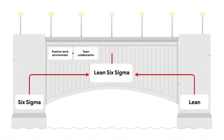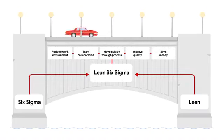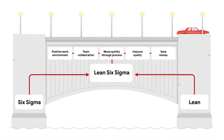The uses for Lean Six Sigma are common in projects that have goals to save money, improve quality, and move through processes quickly. It also focuses on team collaboration, which promotes a positive work environment. The idea is that when your team feels valued, motivation and productivity increases, and the whole process functions more smoothly.